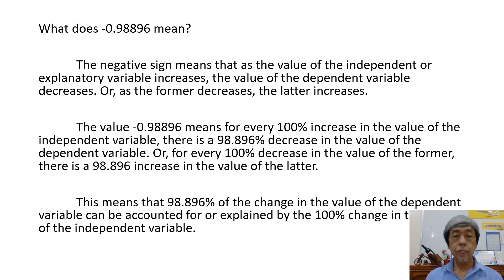For every 100% decrease in the value of the former, there is a 98.896% increase in the value of the latter. This also means that 98.896% of the change in the value of the dependent variable can be accounted for or explained by the 100% change in the value of the independent variable.